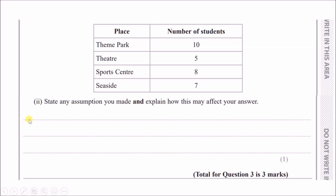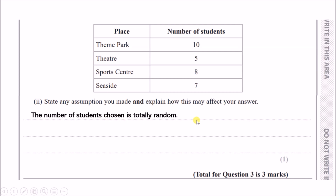For the second part, state any assumptions you made and explain how this may affect your answer. When they're talking about assumptions, they mean how we got this data. Since we collected data, it should have been random, because that's how you get accurate results — you always pick random data. The bigger the sample size, the more accurate. The students chosen are random, making it fair and unbiased, so you get more accurate results.